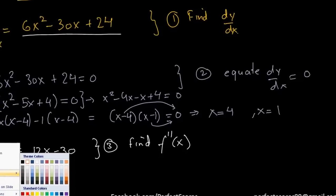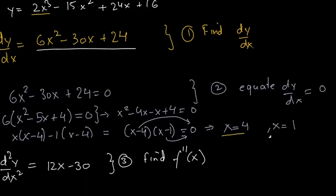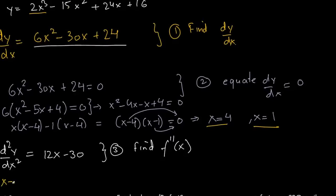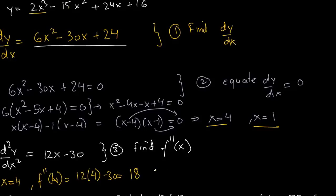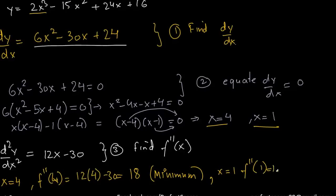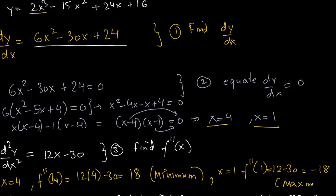Step 4 is to substitute the x values. At x = 4: d²y/dx² = 12(4) - 30 = 48 - 30 = 18. Since the double derivative is greater than zero, x = 4 is a minimum point. At x = 1: d²y/dx² = 12(1) - 30 = 12 - 30 = -18. Since the double derivative is less than zero, x = 1 is a maximum point.